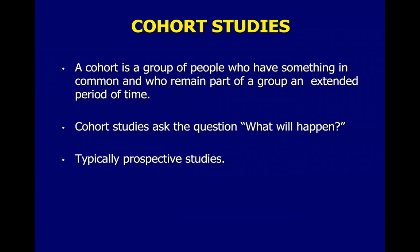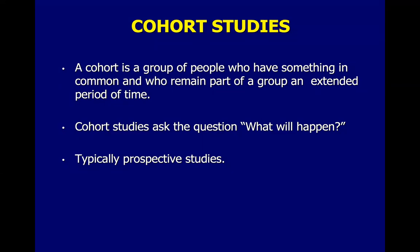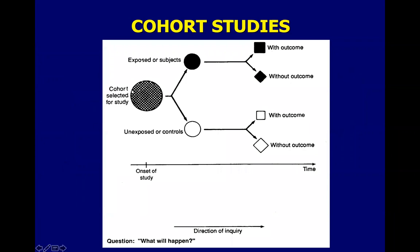The fourth type of observational study is the cohort study. Cohort means a group — a group of people who have something in common. A cohort study takes this group and follows them over time. We start by asking 'What will happen?' They are typically prospective studies. Unlike case control studies, cohort studies start with the exposures and look forward to the outcomes. Some members of the cohort have the exposure, some don't, and we follow them forward to see who develops the outcome.